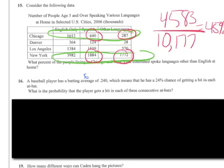Number 16, a baseball player has a batting average of .240, which means that he has a 24 percent chance of getting a hit in each at-bat. What is the probability that the player gets a hit in each of three consecutive at-bats?